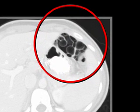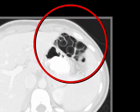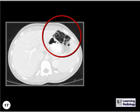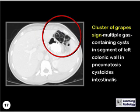What's the name of this sign? It's the cluster of grape sign, multiple gas-containing cysts, most frequently in a segment of left colonic wall in pneumatosis cystoides intestinalis.